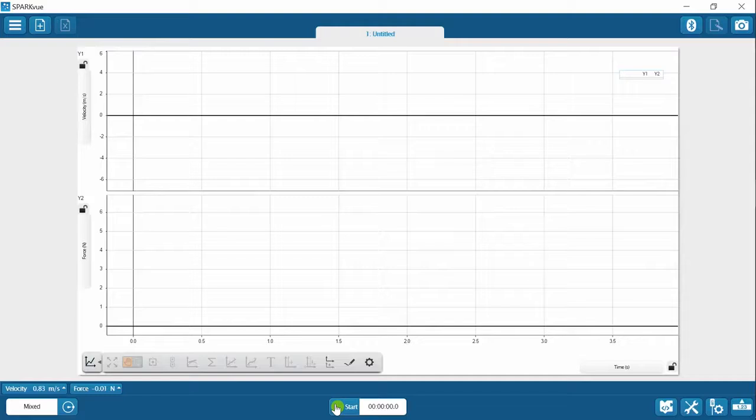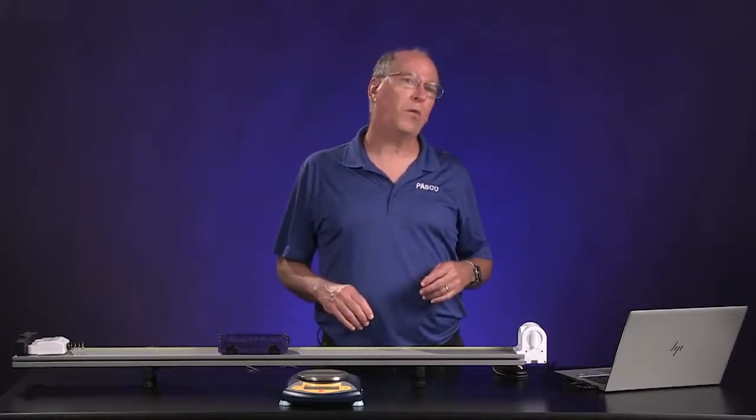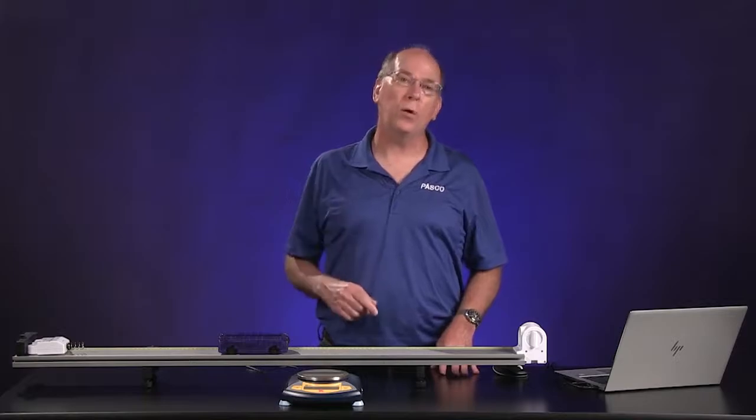We've configured SparkView to display velocity versus time and force versus time on a graph. Since collisions happen over a short period of time, we set the data sample rate of the force sensor to 200 Hz.